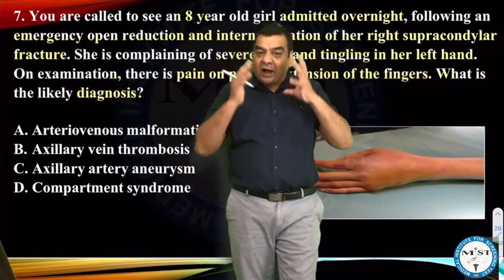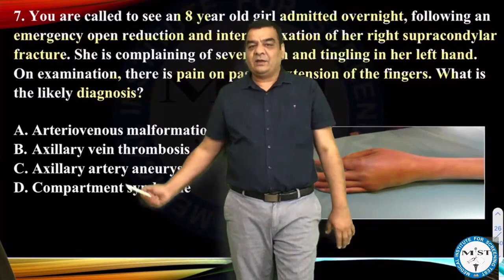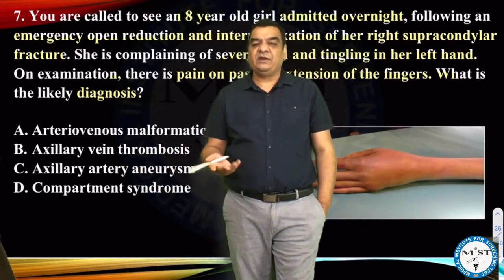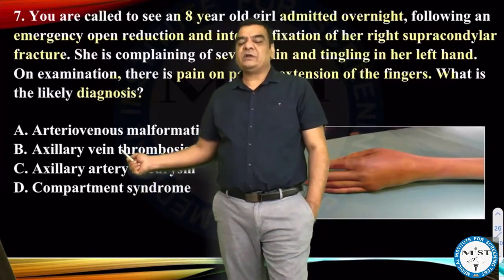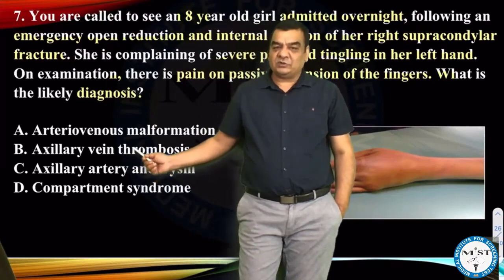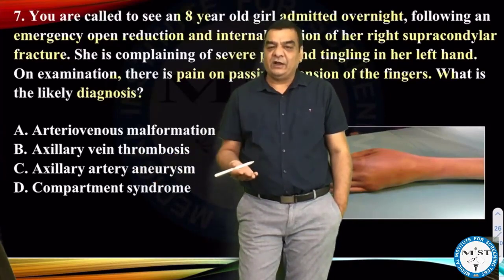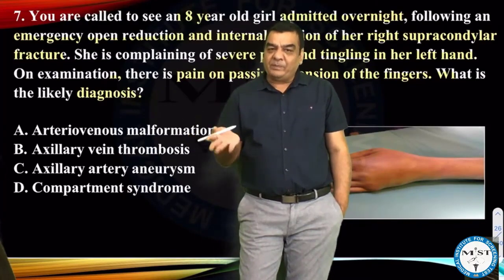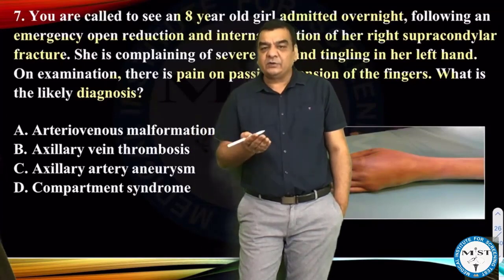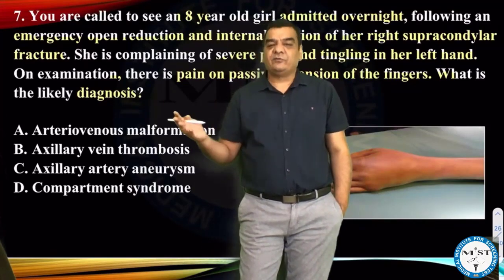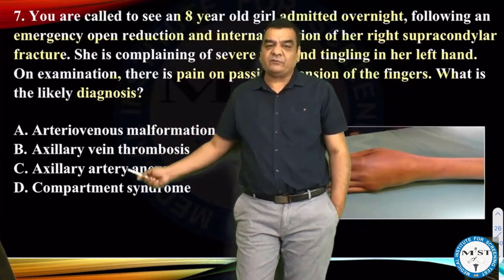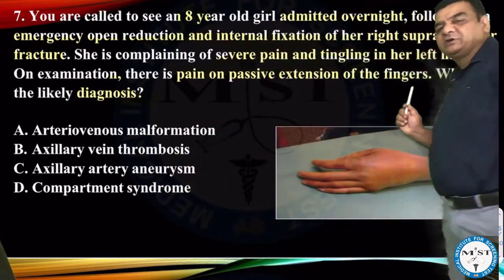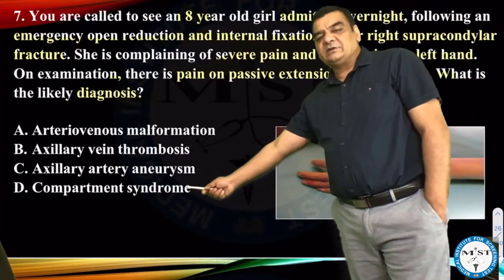This is how we need to identify the keywords quickly. This cannot be a case of AV malformation - in AV malformation there would not be pain on passive stretching. Similarly for axillary vein thrombosis - with vein thrombosis there would be pain and swelling, like DVT, but there would not be pain on passive stretching. Axillary artery aneurysm would not have this type of presentation either. So we can easily rule out the first three options. The correct answer, because of the keyword pain on passive stretching of the fingers, is compartment syndrome.